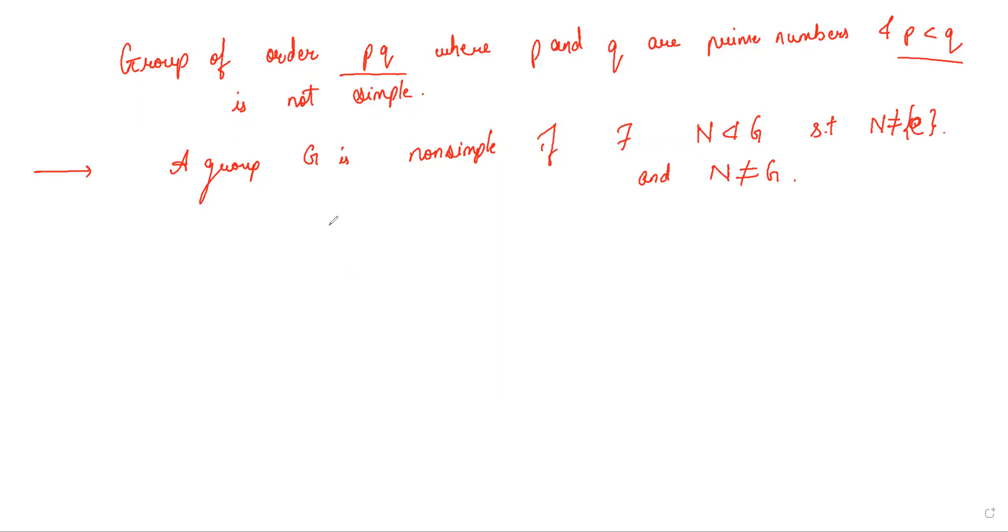So basically, we need to produce such an N for a group of order pq. So let's start. Let G be the group of order pq, p is less than q.